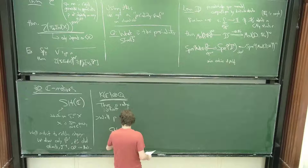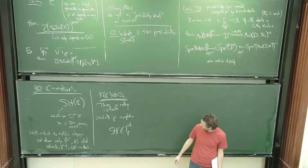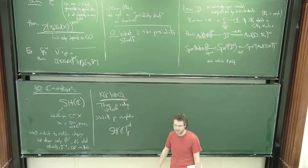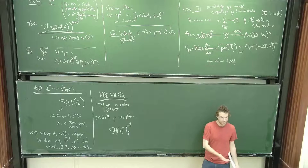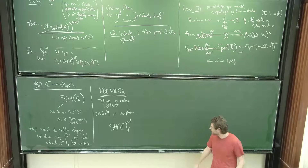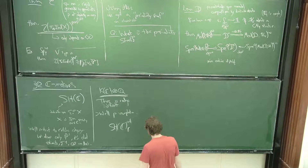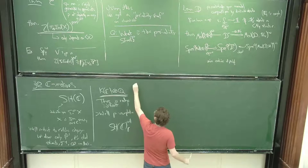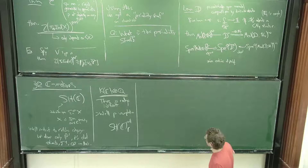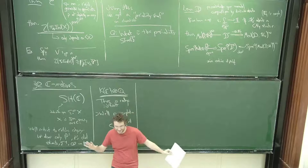So we have arrived at the P-complete cellular C-motivic category as the category we want to work with when we remove all the things we don't know how to say much about. Of course that's no guarantee we'll be able to say anything about this particular category. But in fact, over the past 20 years, we have been able to say a tremendous amount about this category.